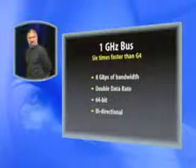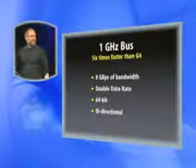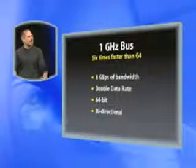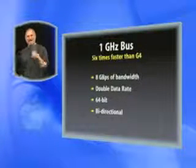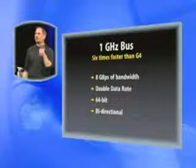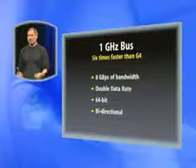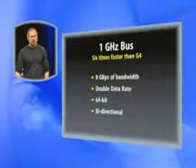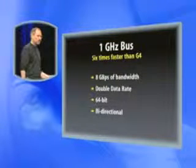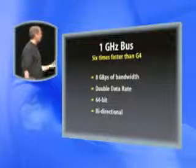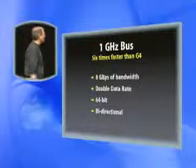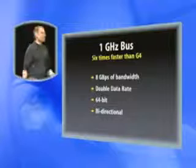Now, let's add a G5. The G5, as we talked about, has a 1 gigahertz bus — that's six times faster than the G4. Eight gigabytes per second of bandwidth into this processor. Sixty-four-bit wide bus, double data rate, bi-directional. It screams.